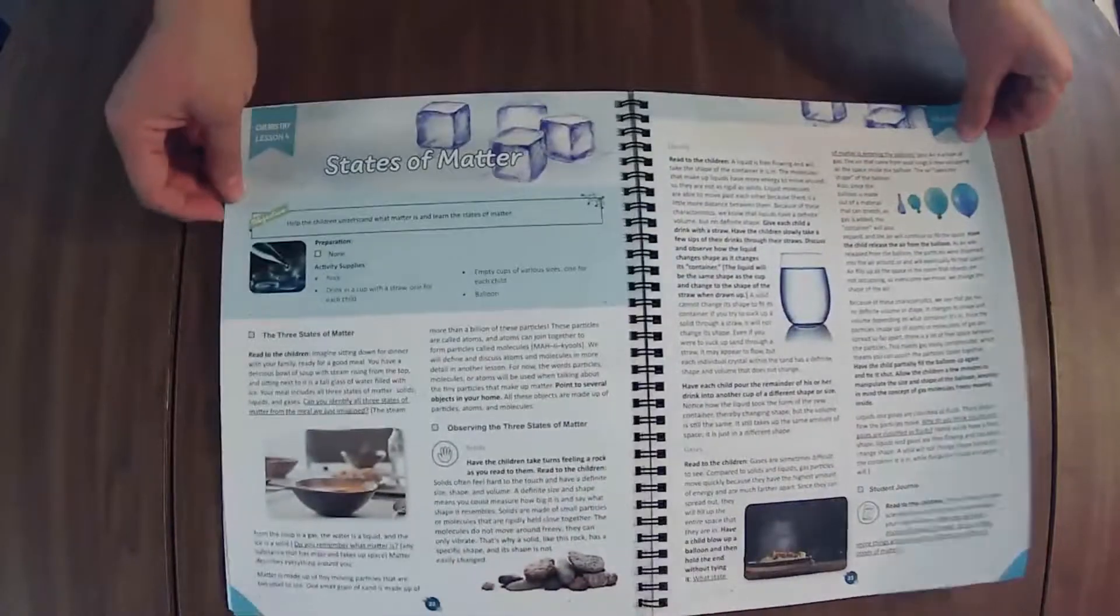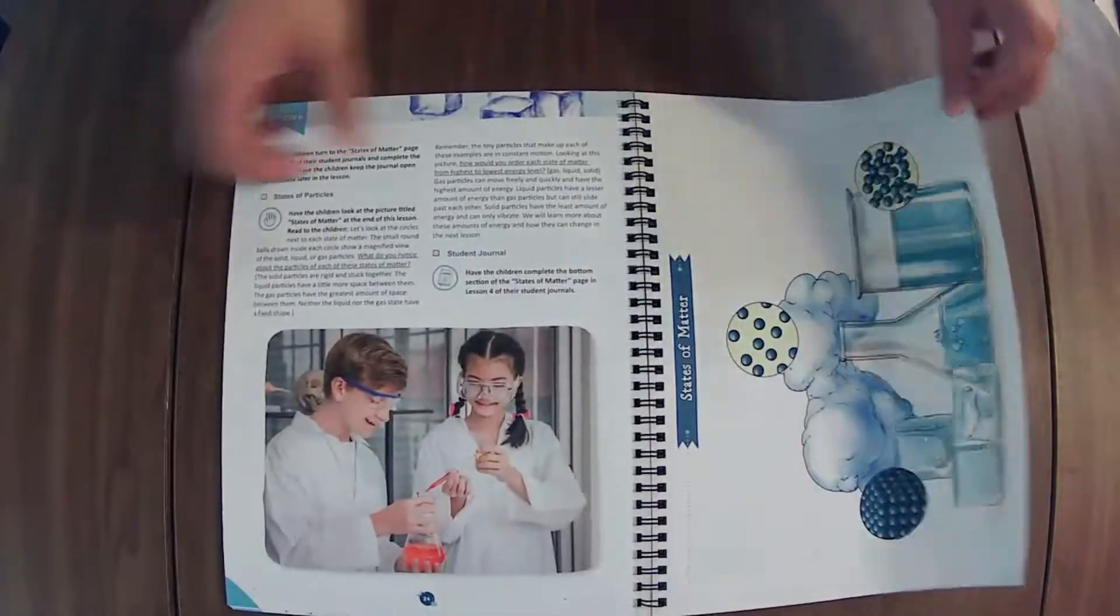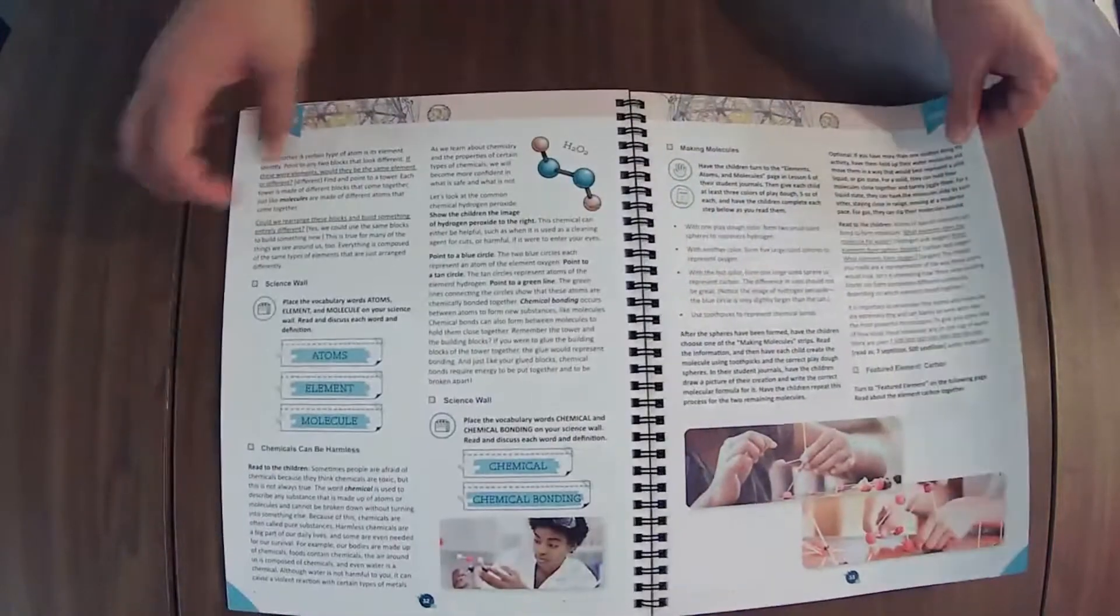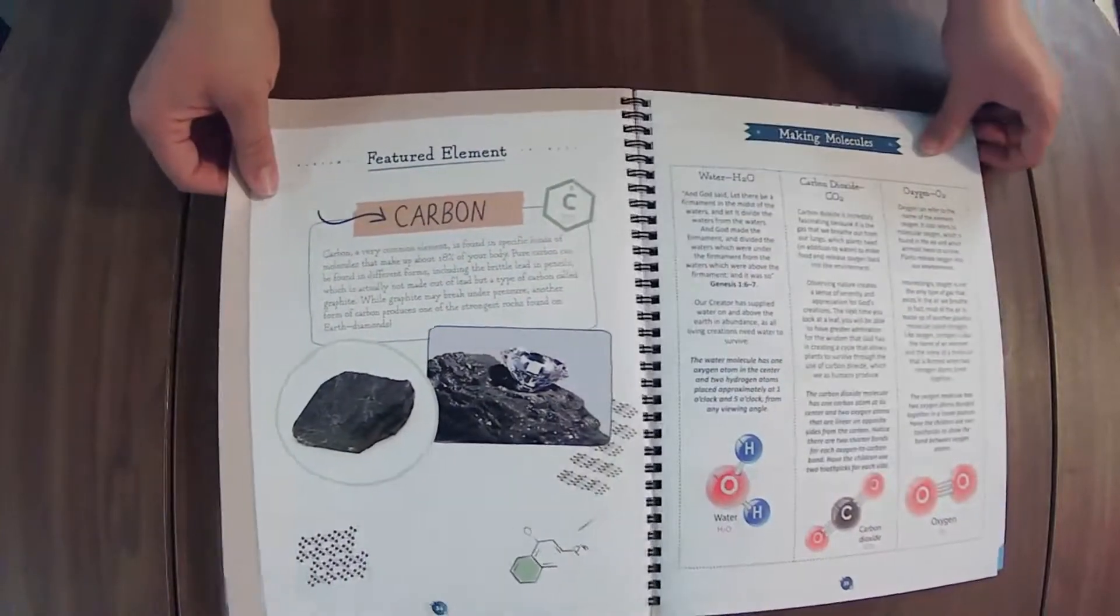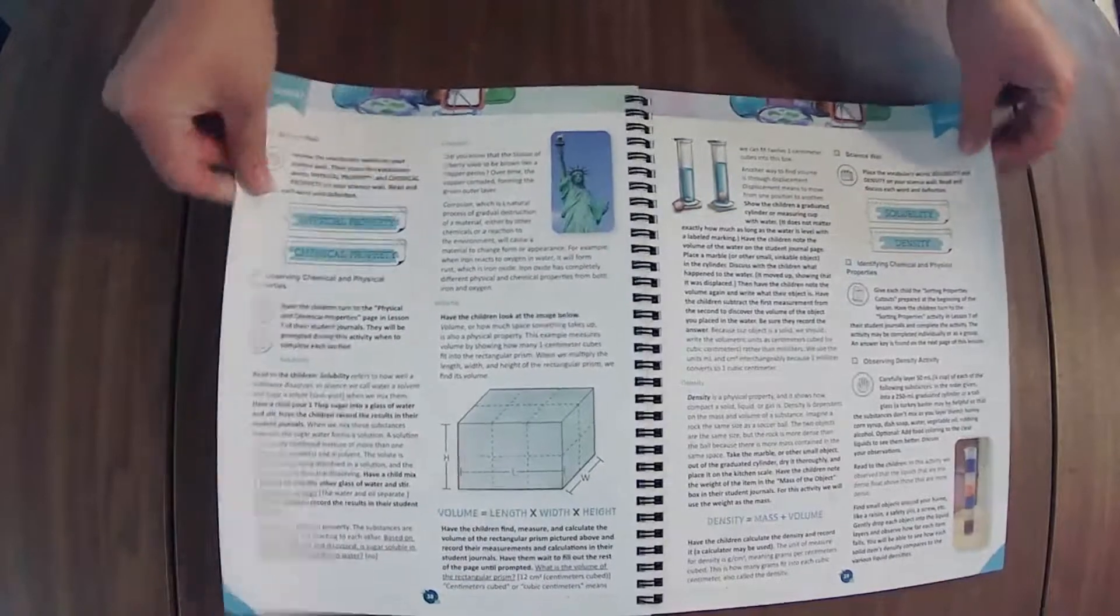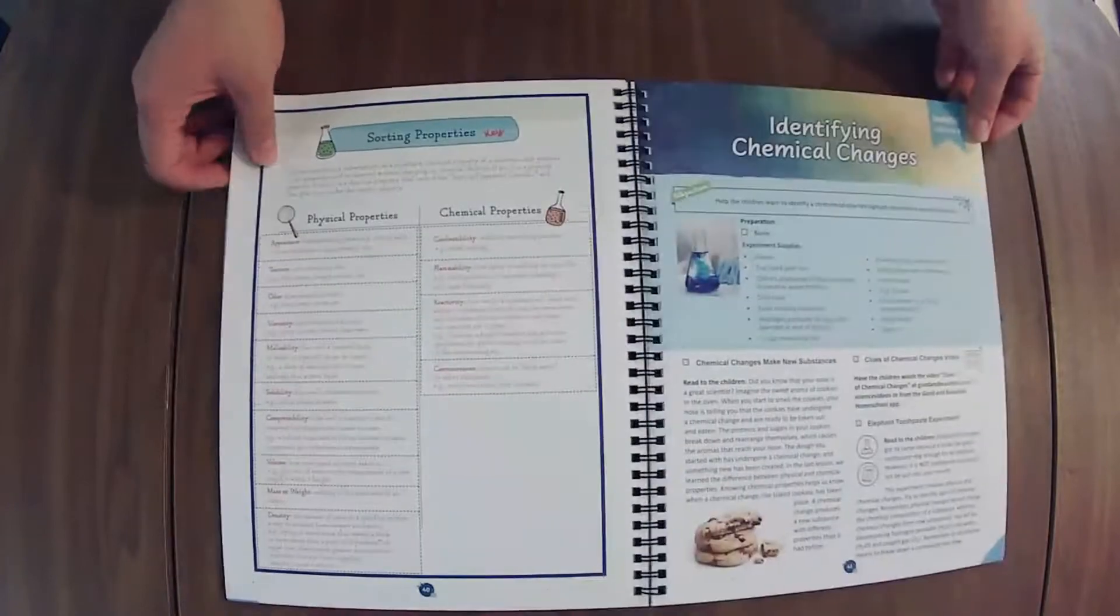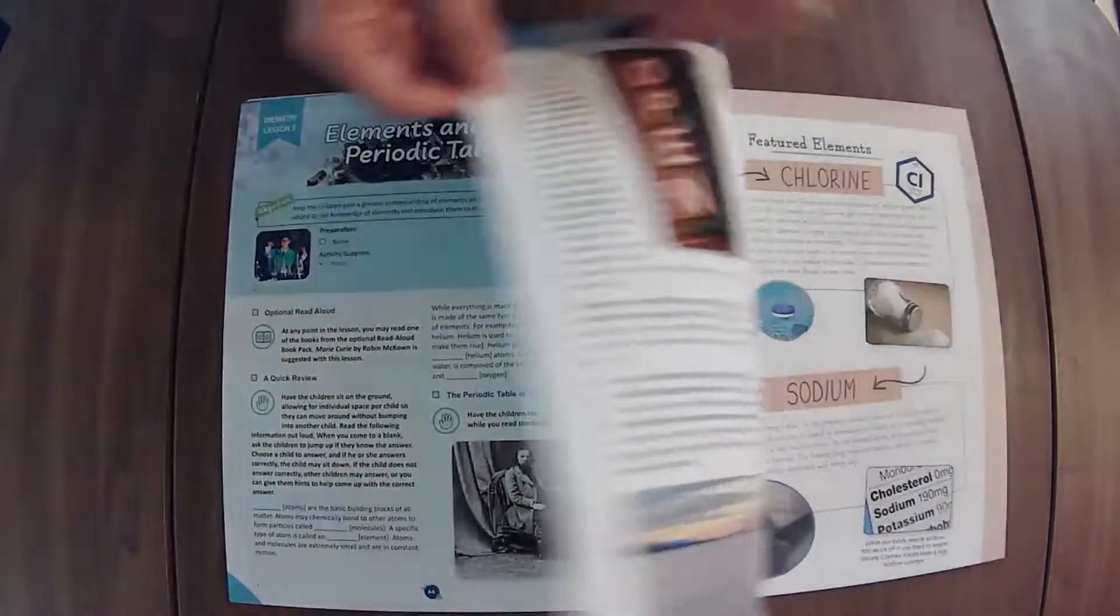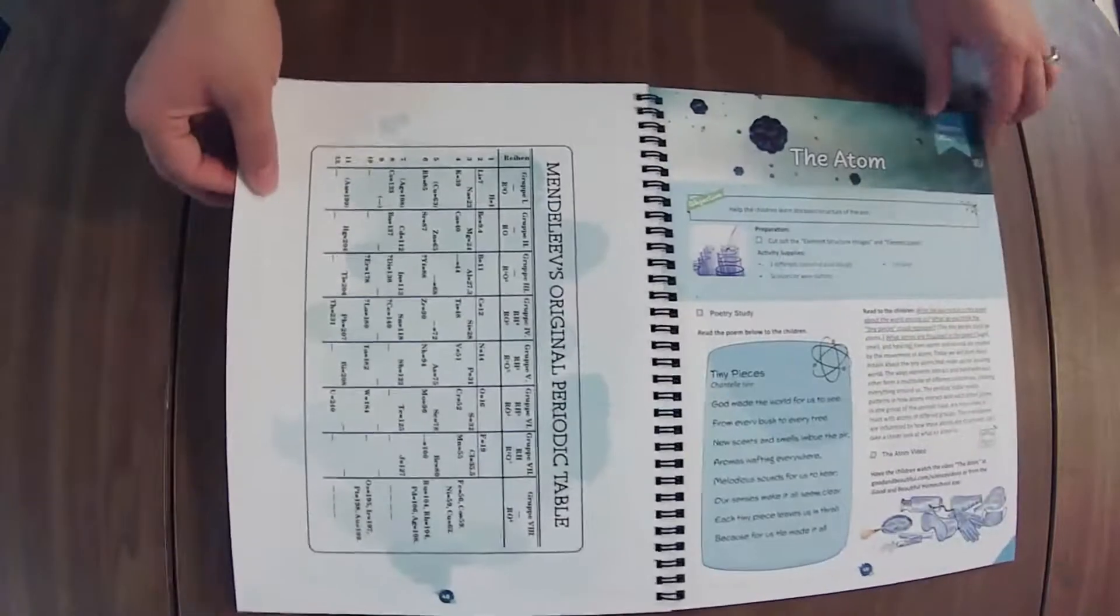I have been doing a series of videos on all of the new and updated science units from The Good and the Beautiful since they started releasing them with the student journals. So everything that has been released up to date, up to this one, I have a video on and they are all in a playlist that I have linked in the description box for you. And as new ones are released throughout the rest of their planned schedule, I will be doing videos on them as soon as they arrive.